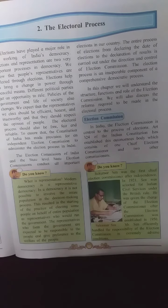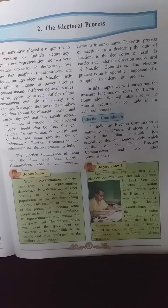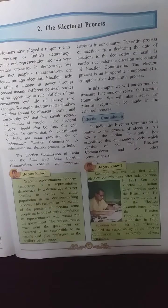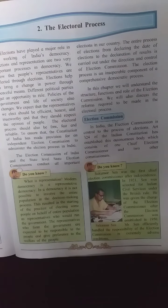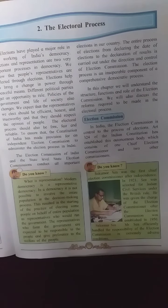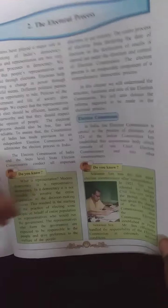In this chapter, we will understand the structure, functions, and role of the election commission, and discuss the reforms required to be made in the electoral process. In India, the election commission is central to the process of elections. Article 324 of the Indian Constitution has established this autonomous body, which consists of one Chief Election Commissioner and two other commissioners.